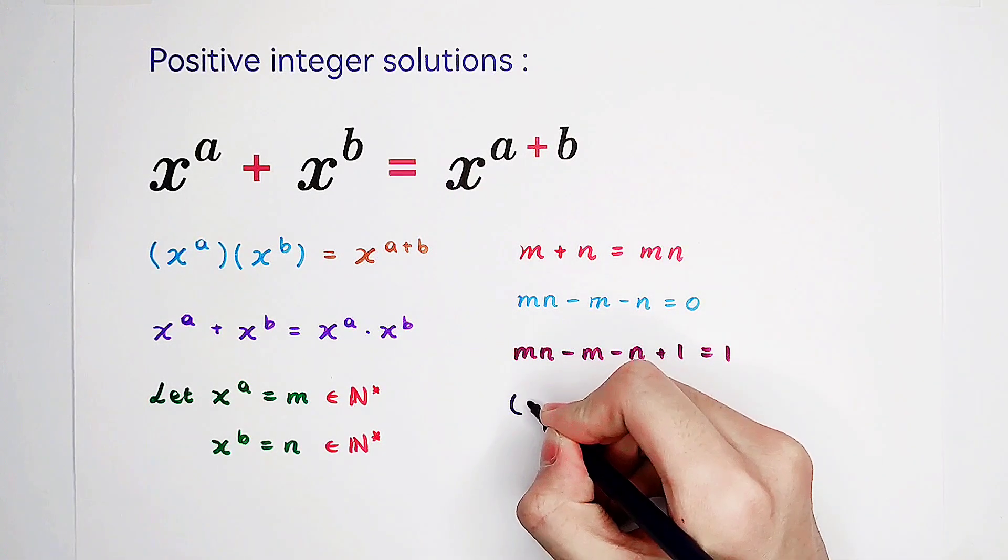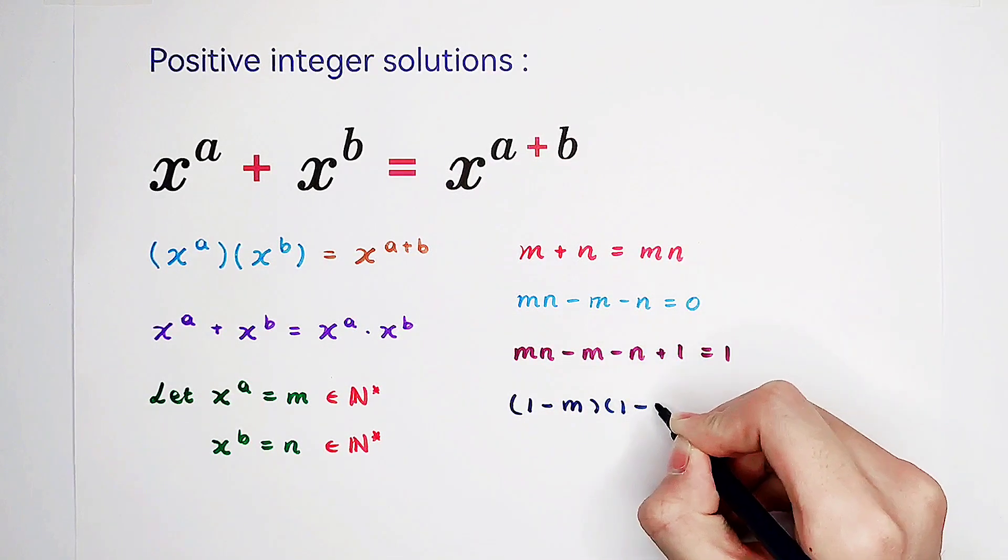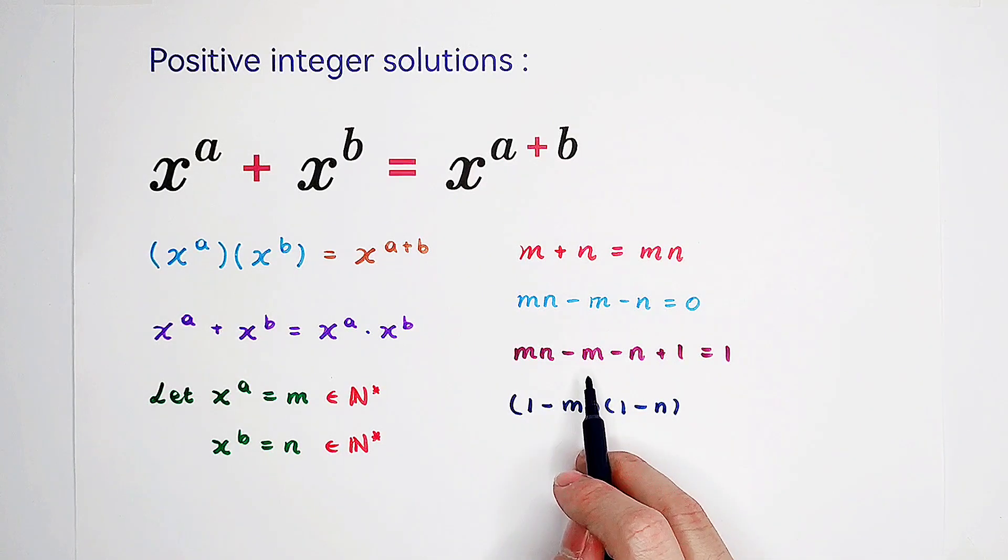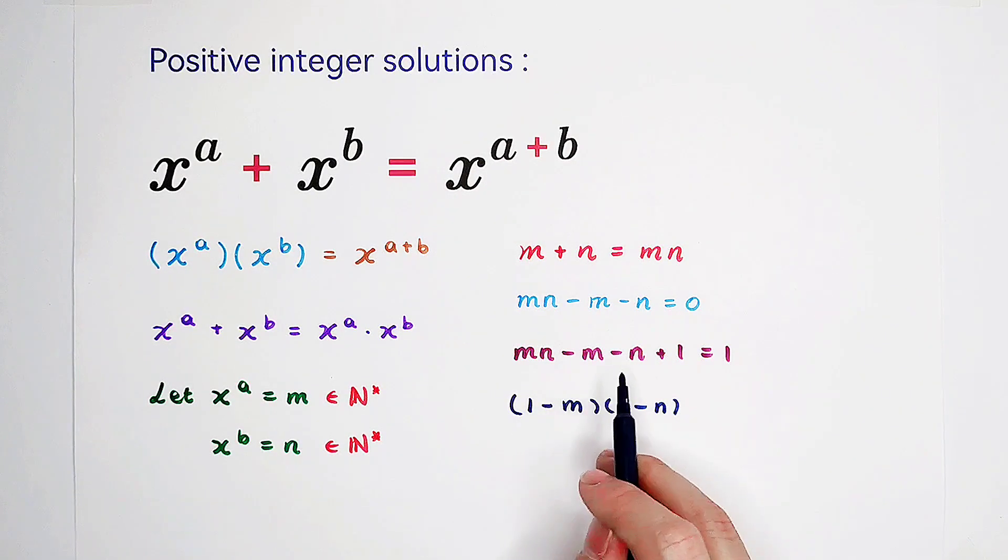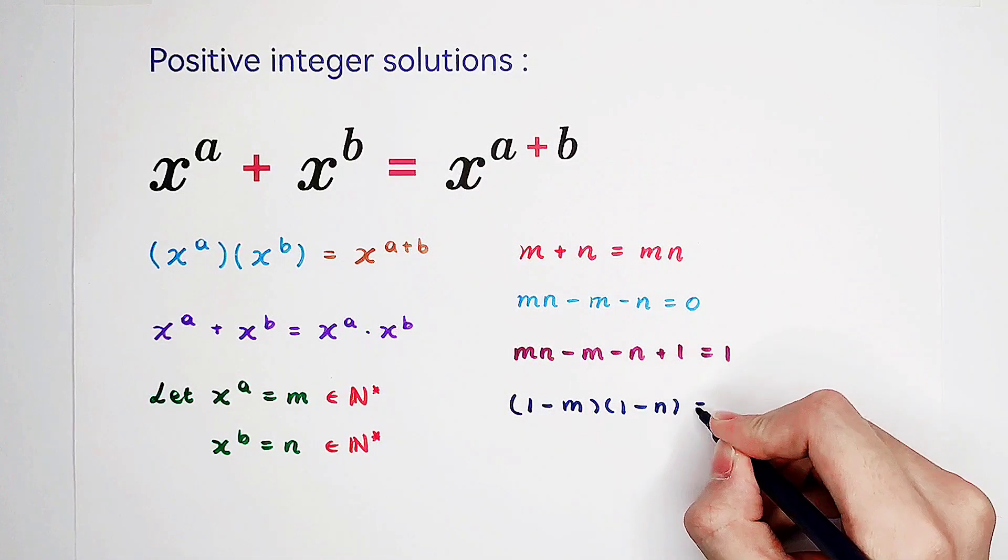we can actually factorize the left-hand side. Because then it can be written as 1 minus m times 1 minus n. You see, 1 times 1 is 1, negative m times 1 is negative m, negative n times 1 is minus n, and negative m times negative n is plus m times n.